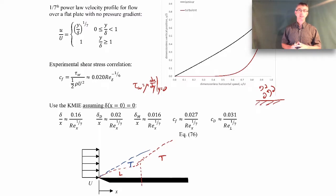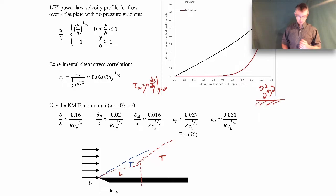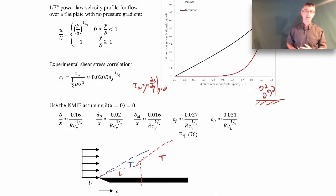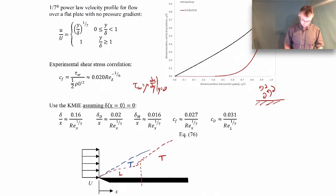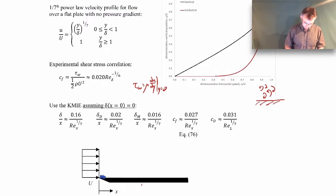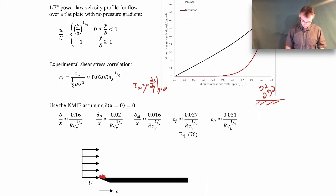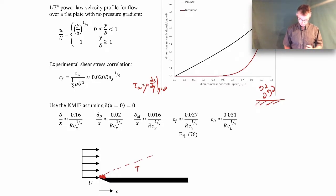If you're dealing with shorter plate lengths where the laminar portion is comparable to the turbulent portion, you need to use a different expression — but we won't cover that in this course. Just be aware of this limitation. These expressions assume the boundary layer is fully turbulent over the whole length. You can actually achieve this in practice by tripping the boundary layer — roughening the surface at the leading edge with sandpaper or a thin wire — so it immediately becomes turbulent.